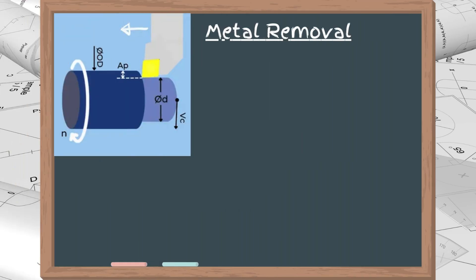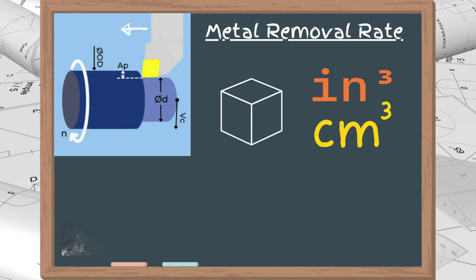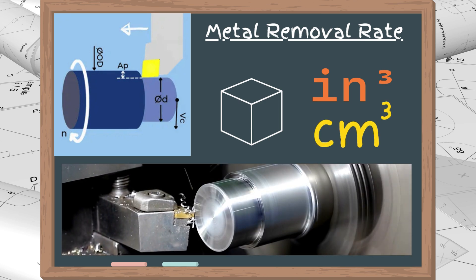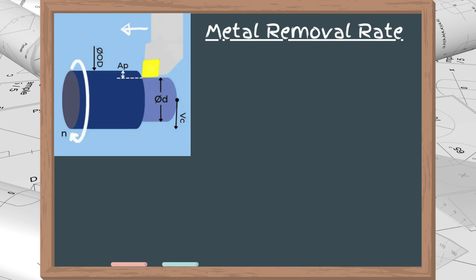The next formula we will study is for metal removal rate, or MRR, as it is usually called. MRR is measured in cubic inches or cubic centimeters per minute and indicates how much material is machined in one minute under a set of cutting conditions. It equals the product of the feed rate, depth of cut, and cutting speed.